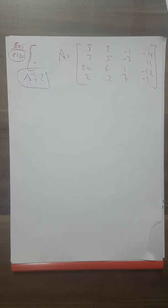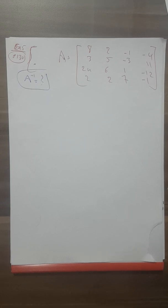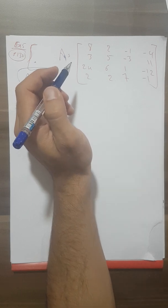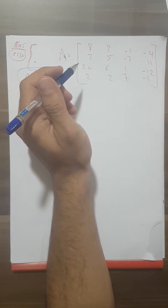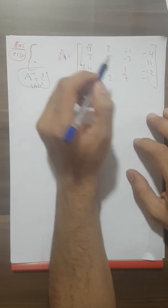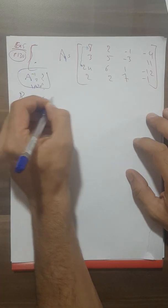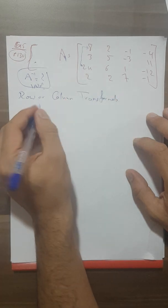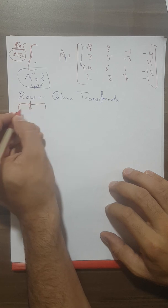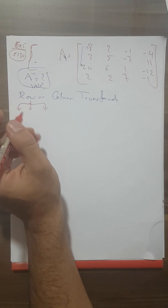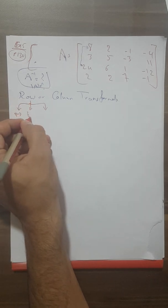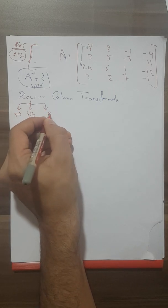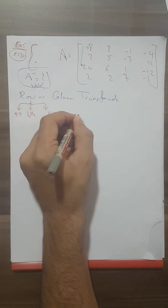When the question asks 'does the inverse exist or not,' you just need to find the determinant — that's all. Since there are no zeros in the matrix, we need to use row or column transformations to simplify. We can use three types of row operations: interchange rows (e.g., R1 and R3), multiply a row by a scalar, or add a multiple of one row to another (e.g., R1 minus 2·R2).